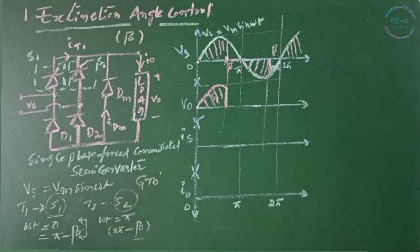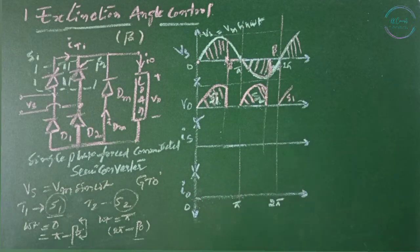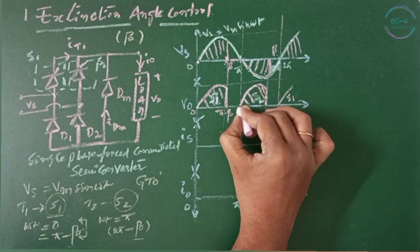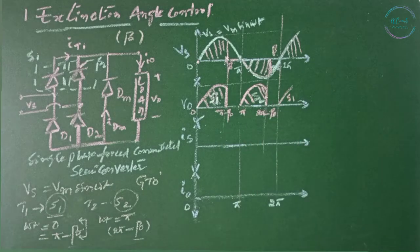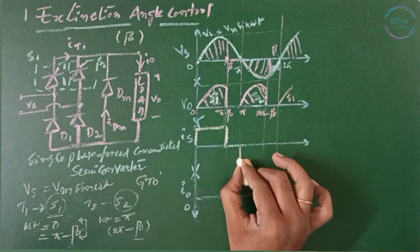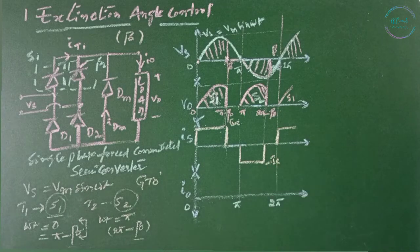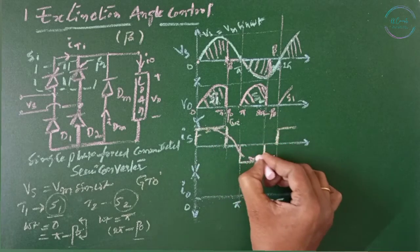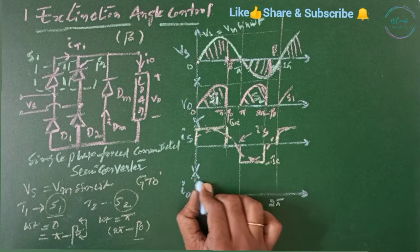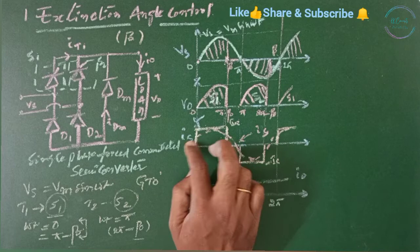This is due to S1. This is due to S2. Again S1 starts conducting. The output voltage remains between 0 and pi minus beta, and pi to 2 pi minus beta. Then the current will be available when the voltage is available. This is IA. This is minus IA. This is IS. If you draw an average value of I naught, it will be continuous.